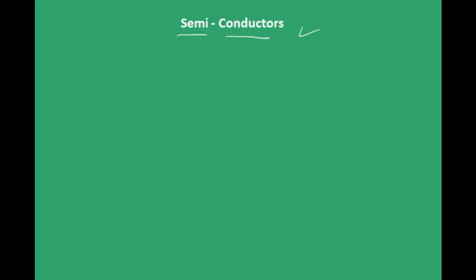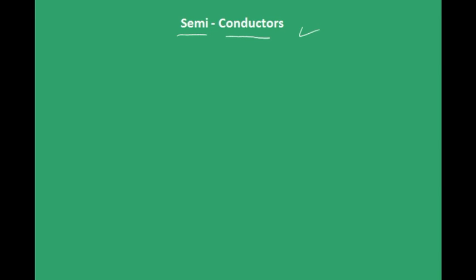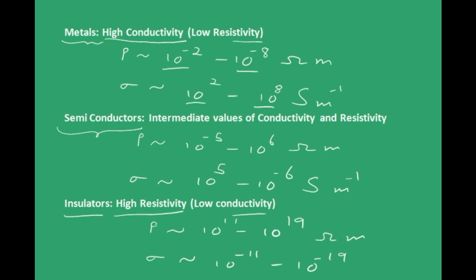First of all, how to differentiate semiconductors from other materials. All materials can roughly be classified into three groups. One is those with very high conductivity and low resistivity — they are conductors, normally metals. At the other extreme, those with high resistivity and low conductivity are known as insulators. They have very few charge carriers, that is why they do not conduct electricity. And those materials having intermediate values of conductivity and resistivity between these two are known as semiconductors.